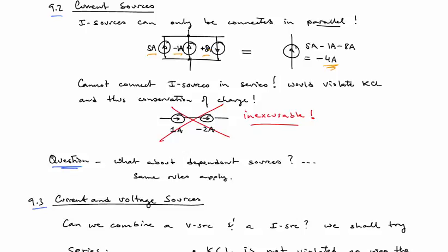Now just like the voltage source could not be placed in parallel, current sources cannot be connected in series. And this cannot be done because at the node between them, you cannot satisfy KCL.